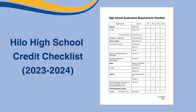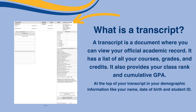What is that thing? A transcript is a document where you can view your official academic record. It has a list of all your courses, grades, and credits. It also provides your class rank and cumulative GPA. At the top of your transcript is your demographic information like your name, date of birth, and student ID.